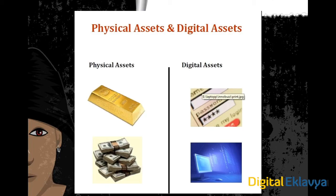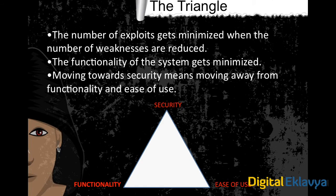Let's learn about physical assets and digital assets. Physical assets are things like gold, cash, and jewelry. Digital assets are things like IDs, passwords, bank account details, Facebook and WhatsApp details — those are your digital assets.